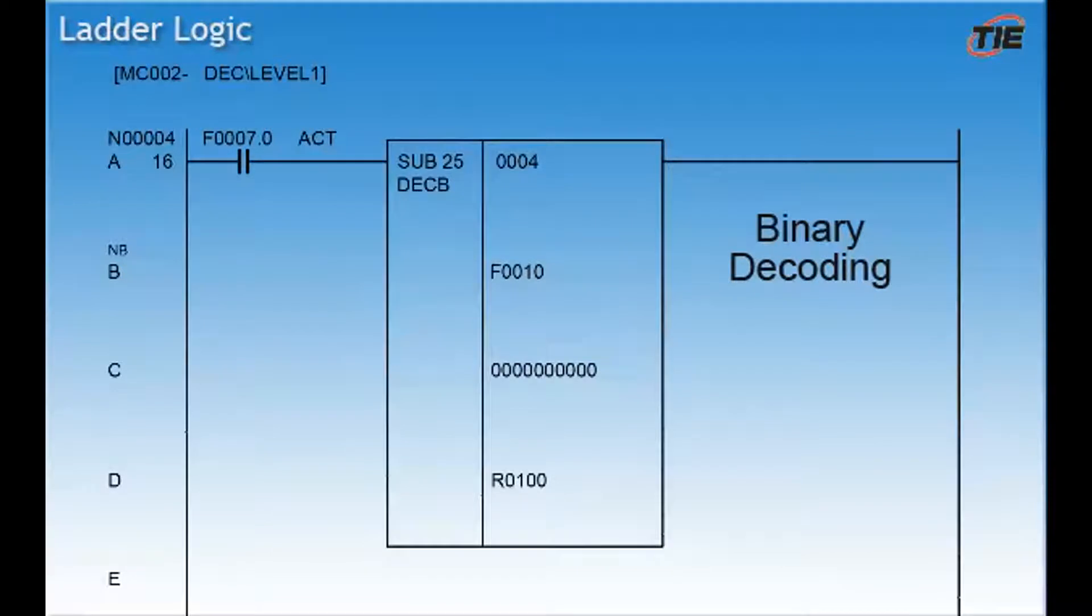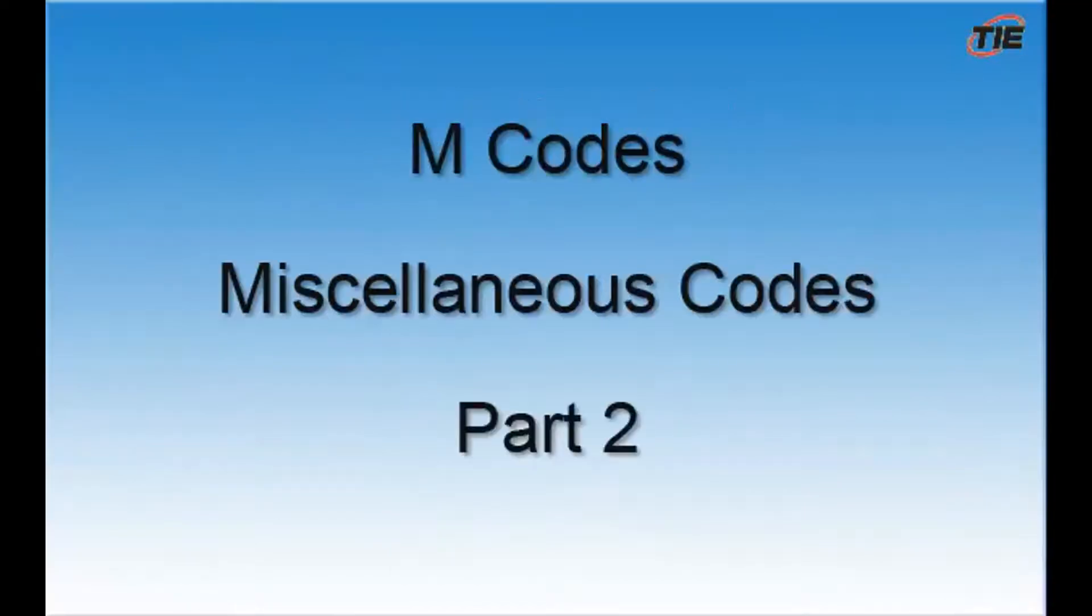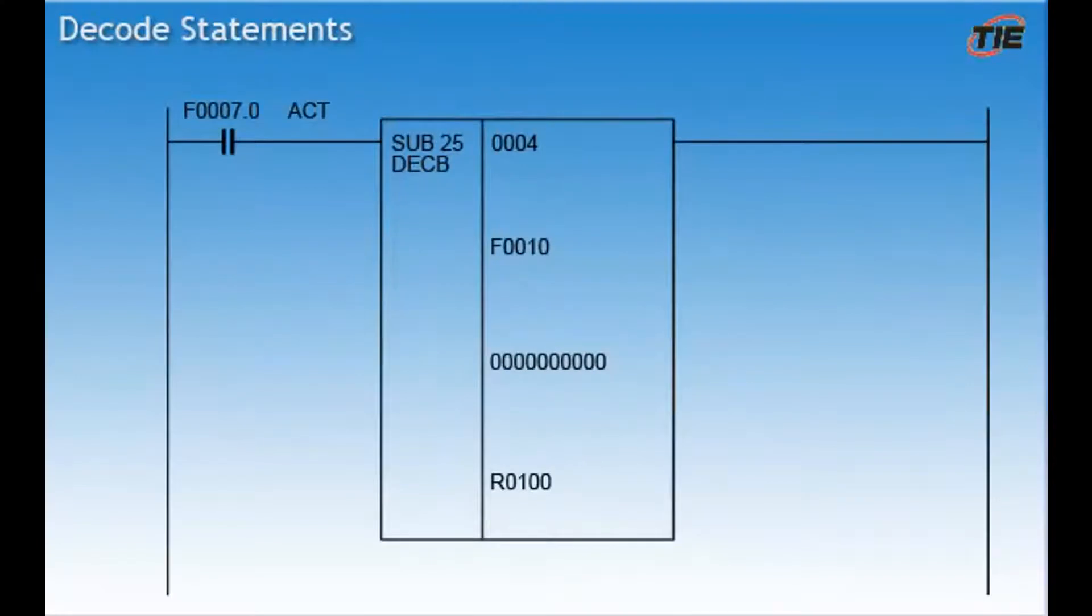This is a code conversion function. It's called binary decoding, or decode for short. It can be used for a number of different things in the ladder. It is commonly used for M codes.